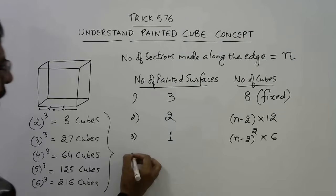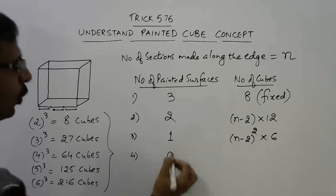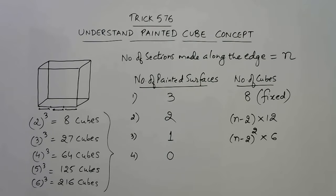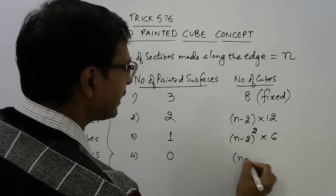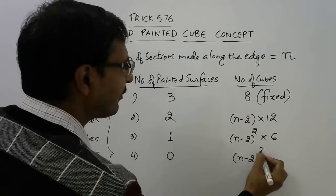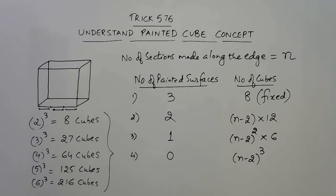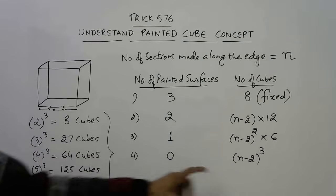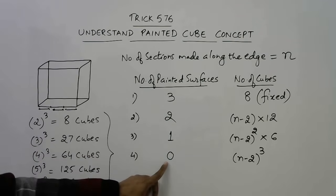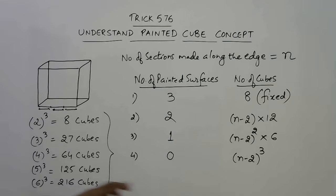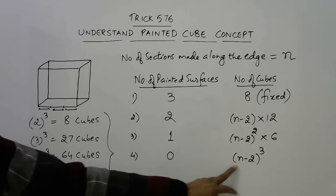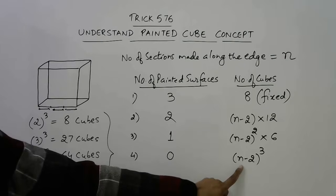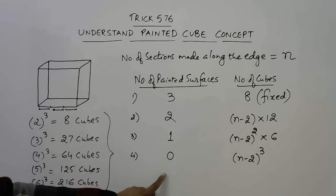Finally, for no painted surface, find the cube of the factor (n − 2). In the case of 8 cubes, n is 2, so there will not be any cube which is unpainted from all sides. But in the case of n equals 3, that is 27 small cubes: (3 − 2)³ = 1. So there will be 1 cube which will have zero painted surfaces.